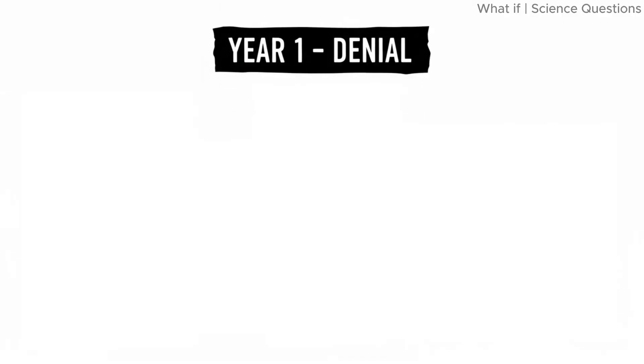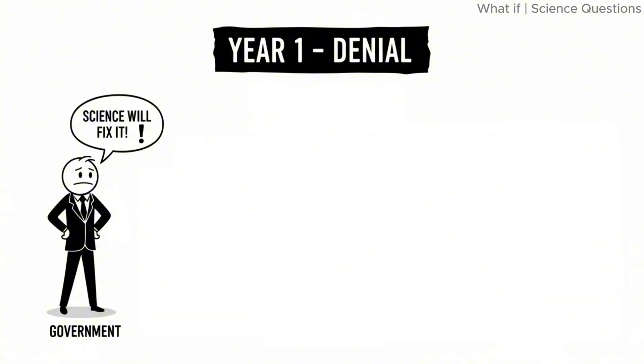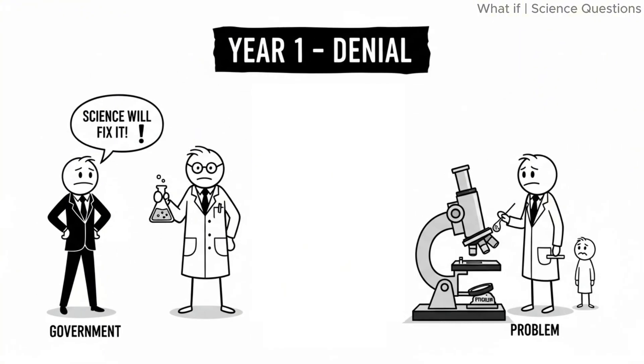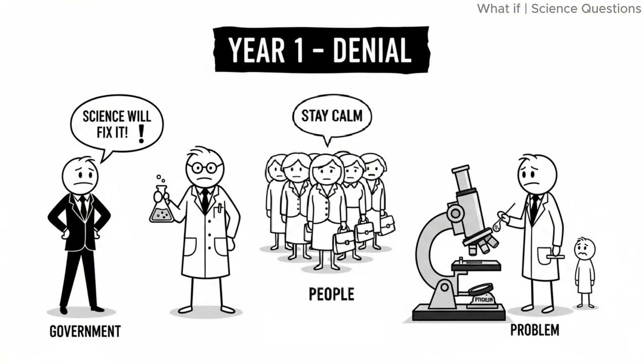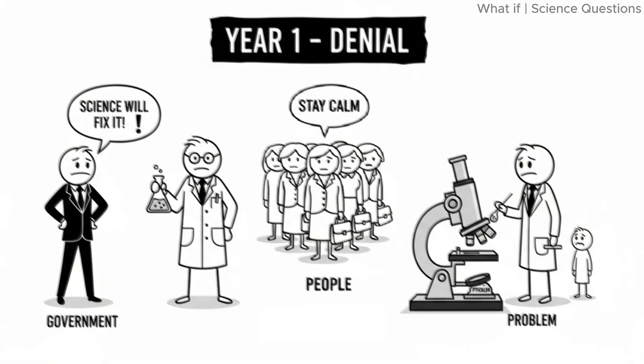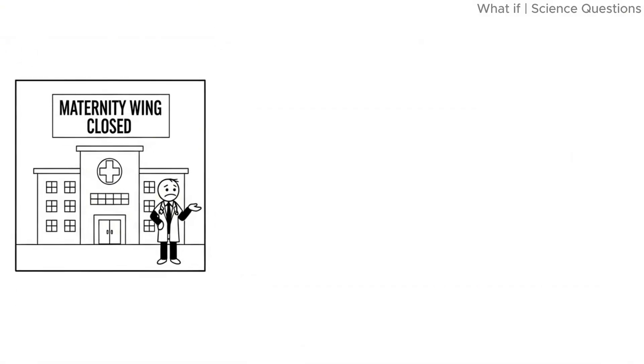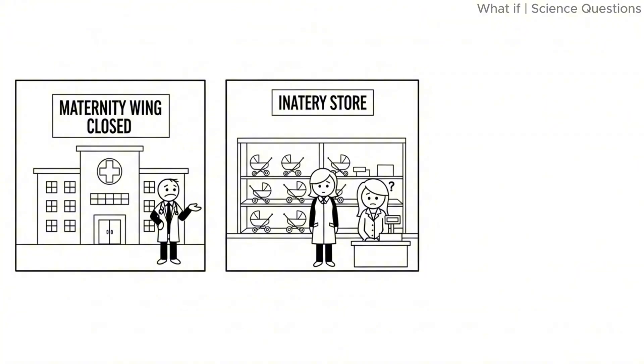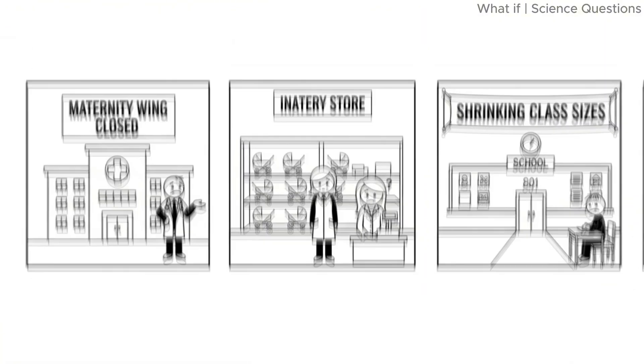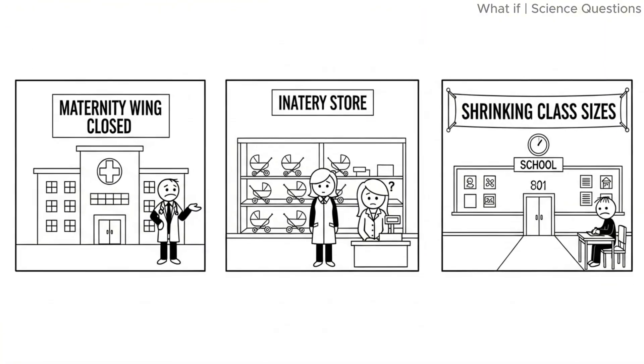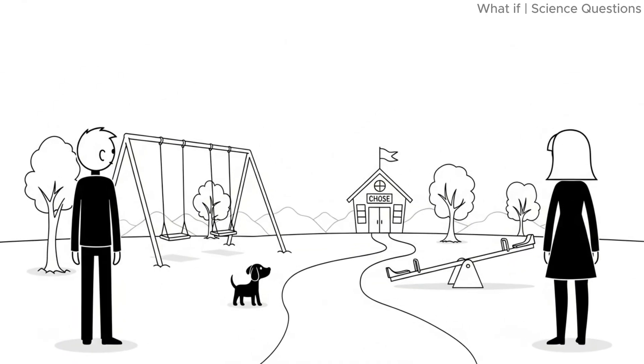Year one. Denial. Governments assure everyone that science will fix it. People are encouraged to stay calm. But hospitals close maternity wings. Strollers disappear from stores. Schools prepare to shrink. Humanity pretends everything is normal until the silence becomes too loud.